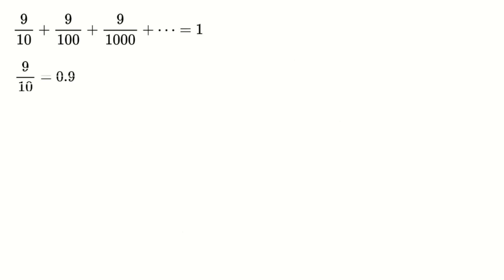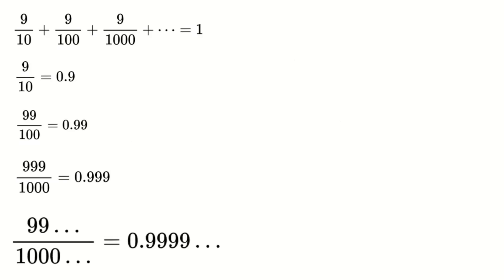Now observe a pattern in fractions. 9 over 10 equals 0.9. 99 over 100 equals 0.99. 999 over 1,000 equals 0.999. This generalizes to 999 to infinity over 1,000 to infinity equals 0.99 dot up to infinity.